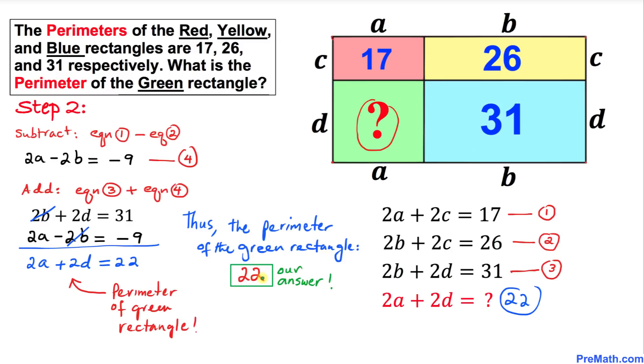So our final answer: the perimeter of the green rectangle turns out to be 22. Thanks for watching, and please don't forget to subscribe to my channel for more exciting videos. Bye!